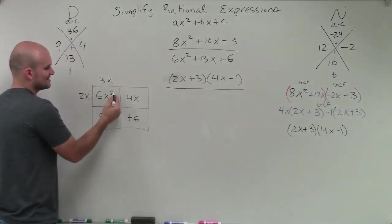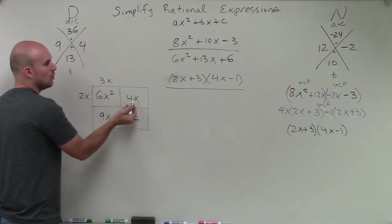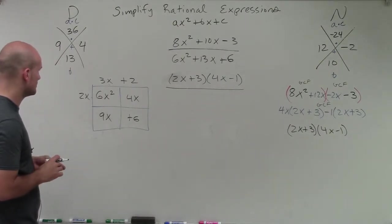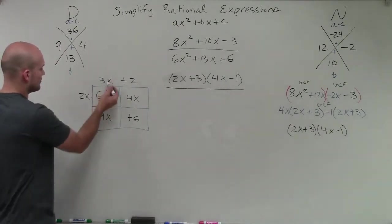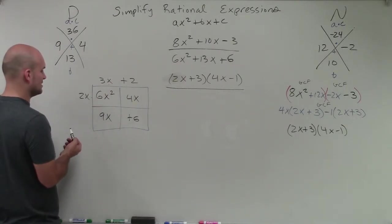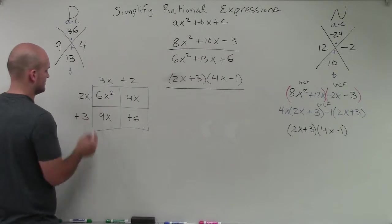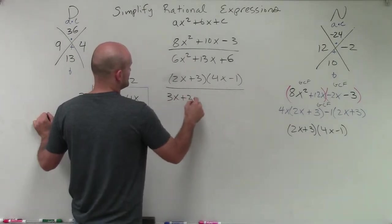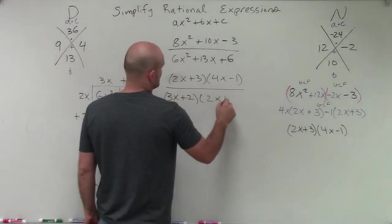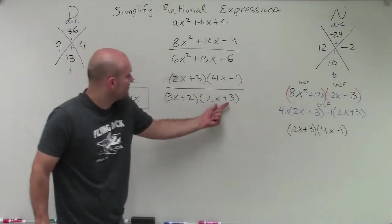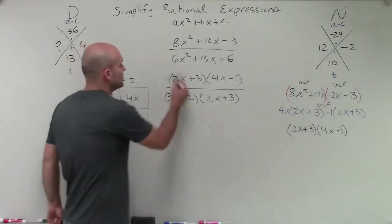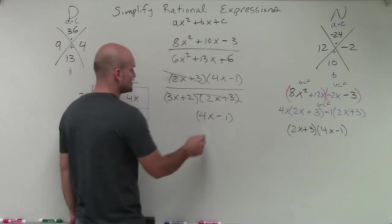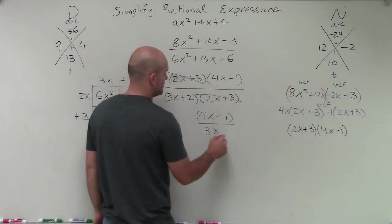All right. 3x times 2x gives us 6x squared. 2x times what gives us 4x? Well, that's going to be plus 2. And then over here, 3x times what gives us 9x? So that's going to be plus 3. So therefore, now those are my two factors. So I can rewrite them as 3x plus 2 times 2x plus 3. And there you can see that I have a binomial divided by the same binomial, which will result in 1, leaving me with a simplified rational expression of 4x minus 1 divided by 3x plus 2.